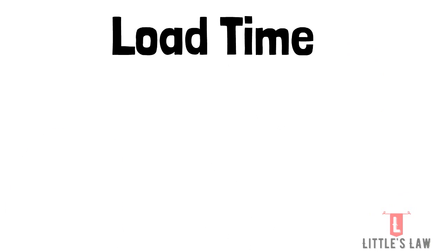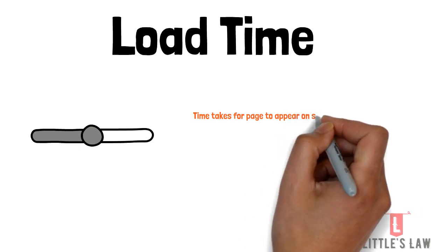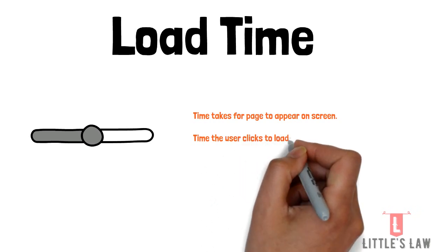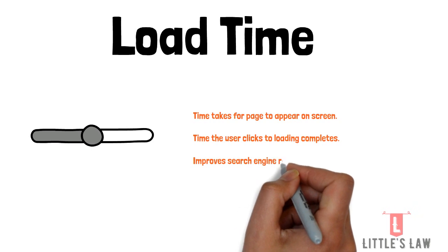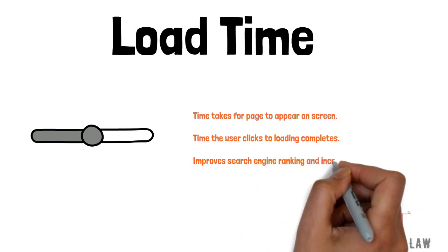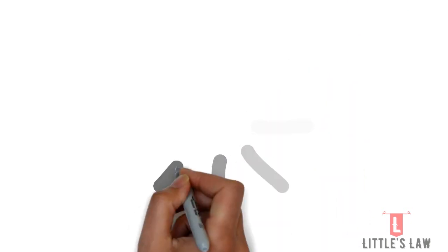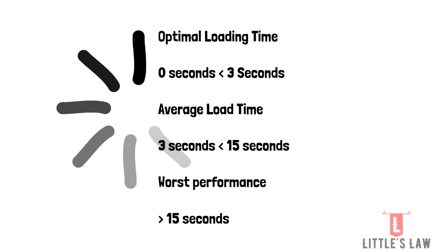The Load Time metric measures the time it takes for a page to appear on the screen, calculated from when we click on a link to when it finishes loading to completion — indicated by the spinner stopping and the X button appearing. This metric is crucial because it determines the search engine ranking and increases customer satisfaction. Load time can be reduced by minimizing file sizes, combining HTML, CSS, and JavaScript files, choosing the most appropriate hosting option, and enabling browser caching.